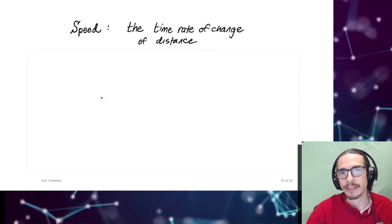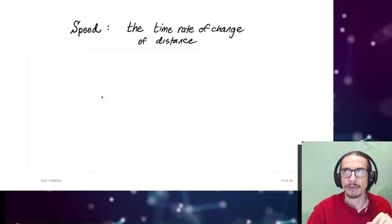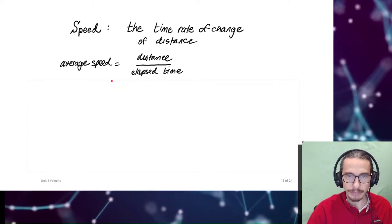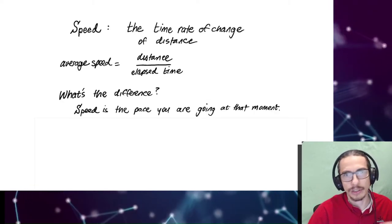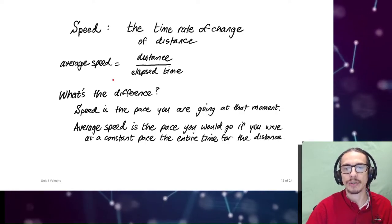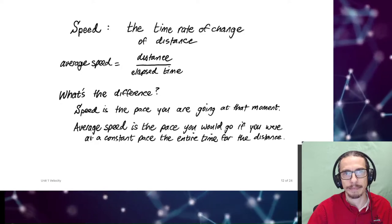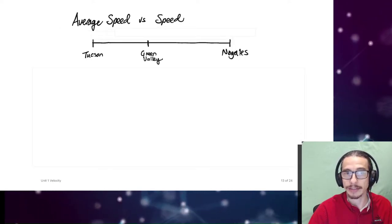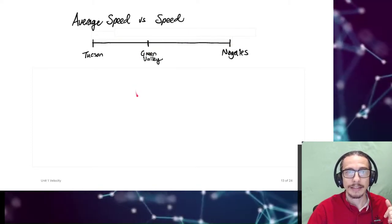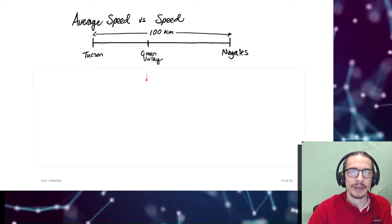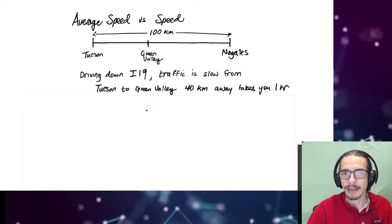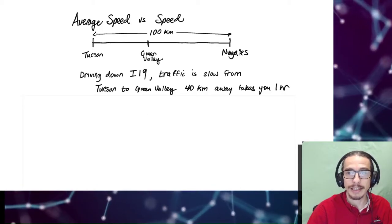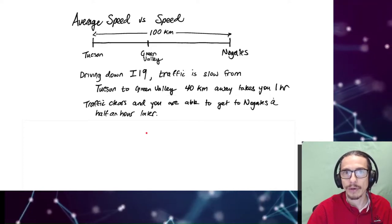Speed is the time rate of change of distance. Average speed, which is more familiar, is total distance divided by elapsed time. The difference: speed is the pace at a given moment, while average speed is the constant pace you would need to maintain over the entire distance. For example, driving from Tucson to Nogales on I-19 — about 100 kilometers total, with Green Valley at about 40 kilometers — suppose heavy traffic makes the first 40 kilometers take an hour, then the remaining 60 kilometers take only half an hour.